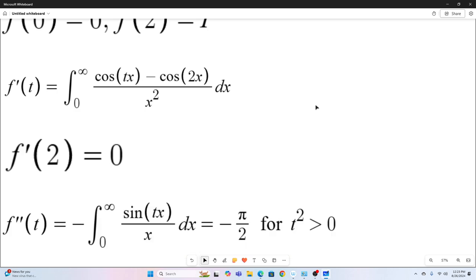Next step, we take another derivative with respect to T, and what you'll get if you do that is negative integral zero to infinity of sine TX over X. And we know that that integral converges to pi over two.